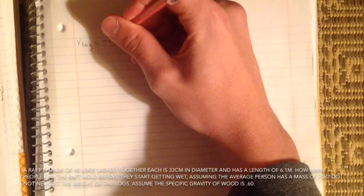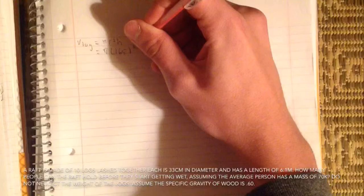A raft is made of 10 logs lashed together. Each is 33 centimeters in diameter and has a length of 6.1 meters. How many people can the raft hold before they start getting their feet wet, assuming the average person has a mass of 70 kilograms? Do not neglect the weight of the logs; assume the specific gravity of the wood is 0.60.